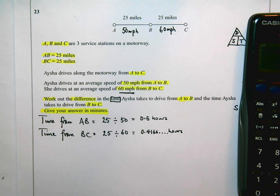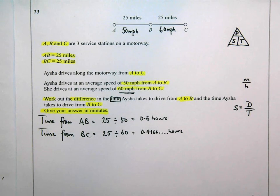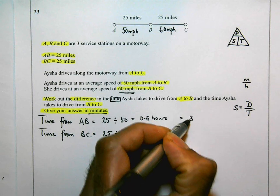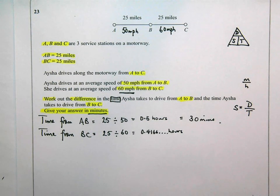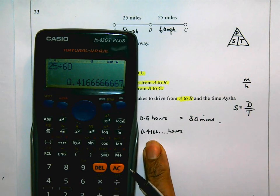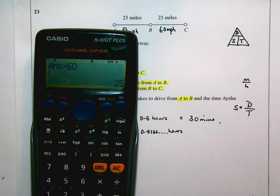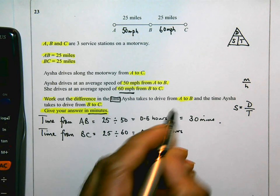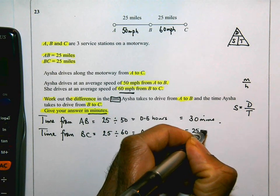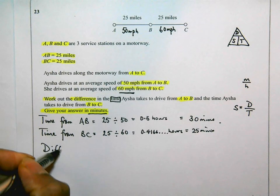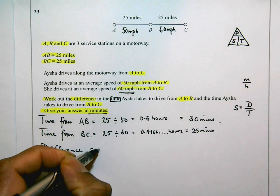Now I need to give the answer in minutes, so I'll convert each of these. 0.5 hours is half an hour, which is 30 minutes. To convert hours into minutes, you multiply by 60. So multiplying the previous answer of 25/60 by 60 gives exactly 25 minutes. To find the difference in times: 30 minus 25 equals 5 minutes.